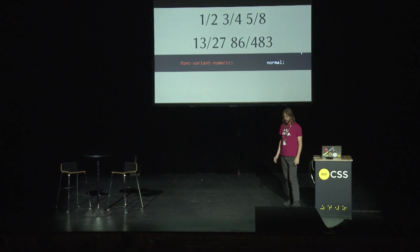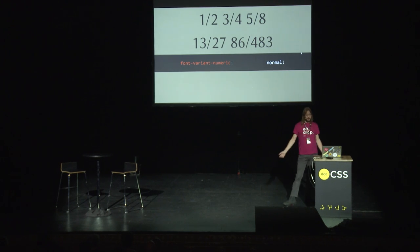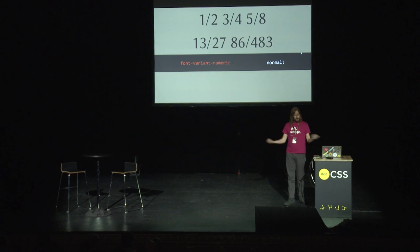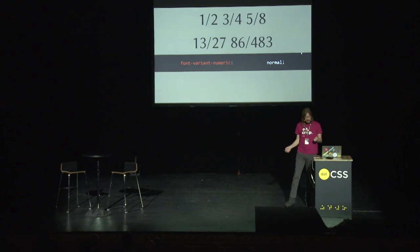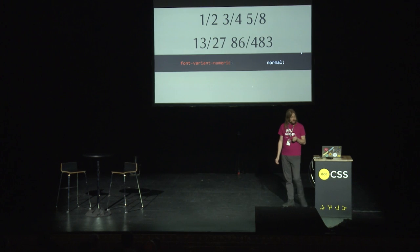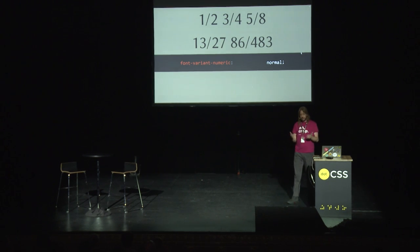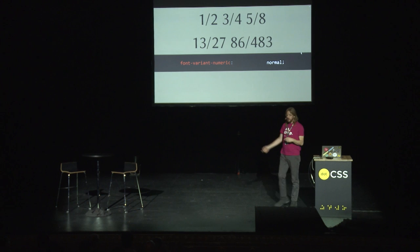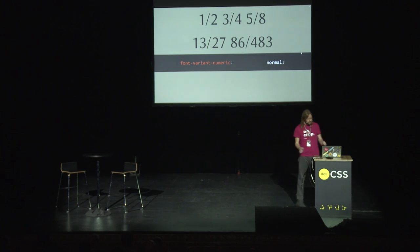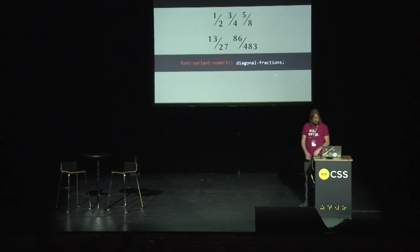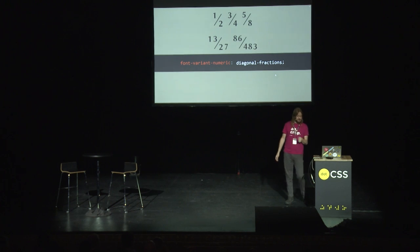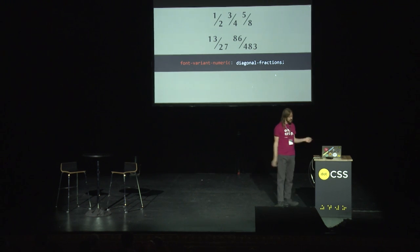Here's another one: fractions. Lots of fonts have a half or three-quarters, but if you want 86/483rds you're going to be out of luck. Also, if you put three-quarters as a Unicode character, someone searching for '3/4' in Google won't find it — it's a different set of characters. But just by writing it as regular characters and setting font-variant-numeric to diagonal-fractions, suddenly we get nice-looking fractions with the numbers all scaled down and shifted. Very simple, just one single property.